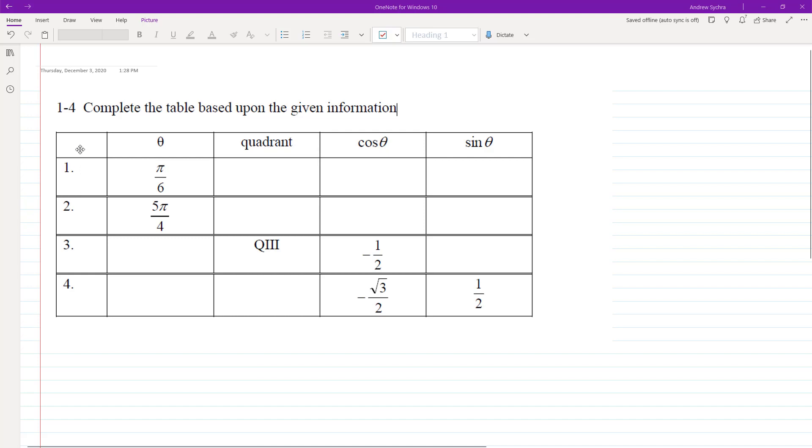Alright, so let's go ahead and complete this table based off of the facts we have. So we have a theta angle of pi over 6.